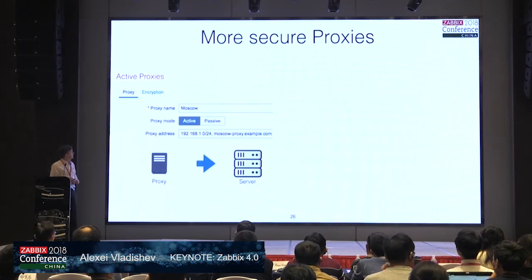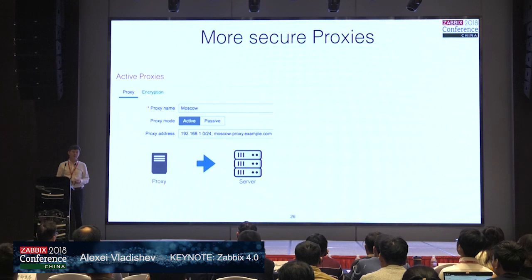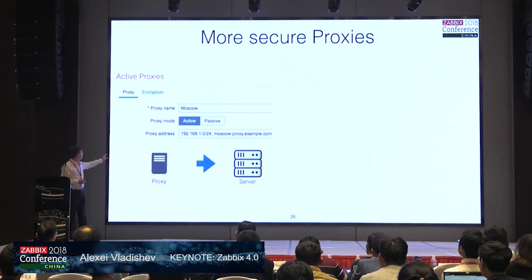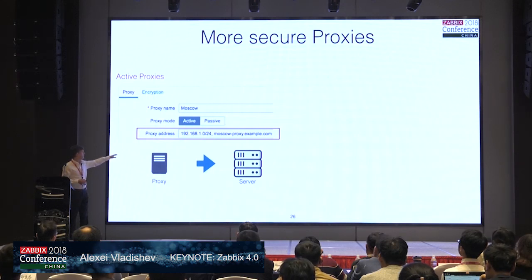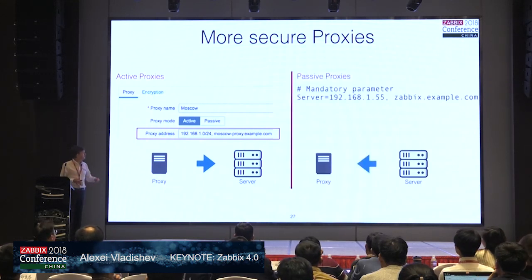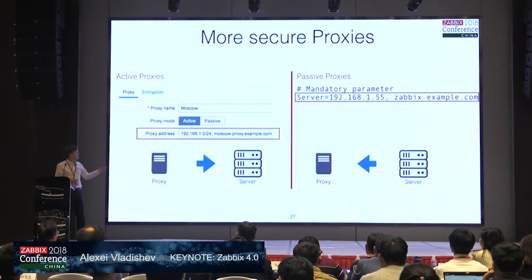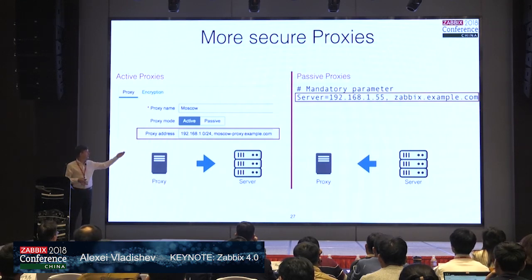Proxies are also more secure now. We introduced validation of IP addresses for active proxies. Active proxies are when the proxy connects to the Zabbix server, and the Zabbix server must validate whether it is the correct IP for that proxy. We have a new parameter called proxy address where you can specify IP addresses, DNS names, or network masks. For passive proxies — where Zabbix server connects to the proxy to get data — we also have a new parameter where you must specify the server IP address, and this is now mandatory.